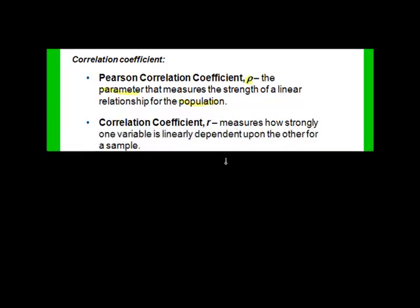The correlation coefficient, R, shows how strongly one variable is dependent upon the other for a sample.